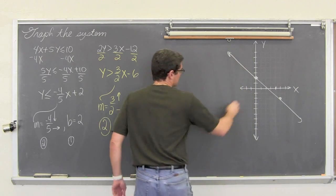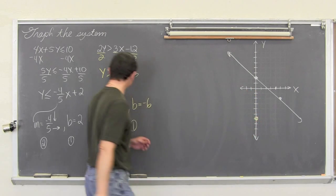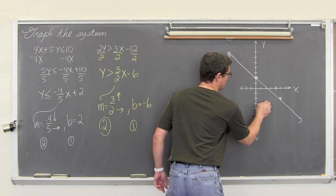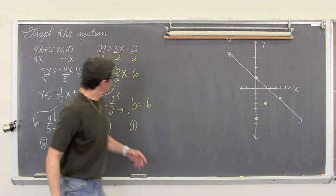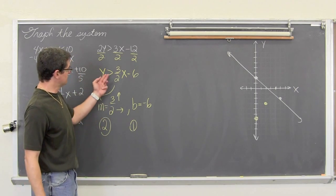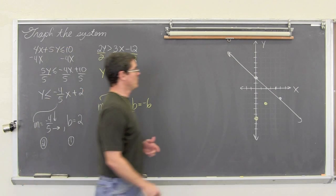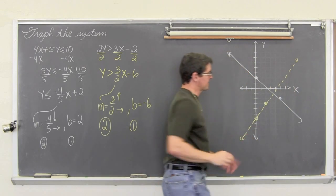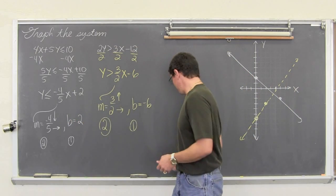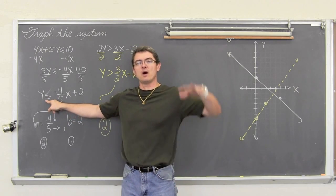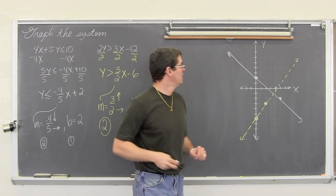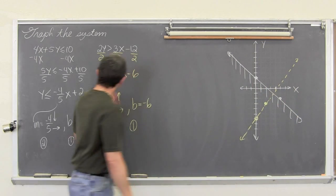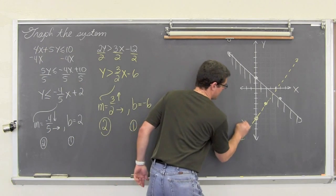From the y-intercept of negative 6 we go up 3 and over 2. This is only y is greater than, not greater than or equal to, so we are going to want to do a dotted line. Now for the shading: the first inequality is y is less than or equal to, so y values get smaller as you go down — we shade below the white line. Y is greater than means we shade above the yellow line.